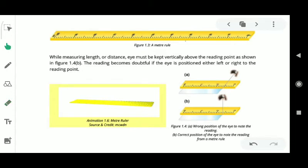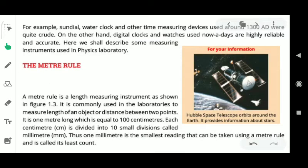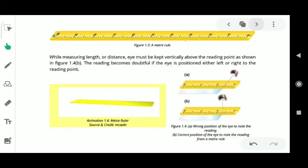You have a meter rule - this is 1 to 100 centimeters or 1 meter. This is the meter rule we use if we measure the length of an object or the distance between two points.